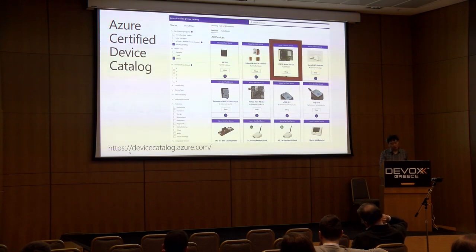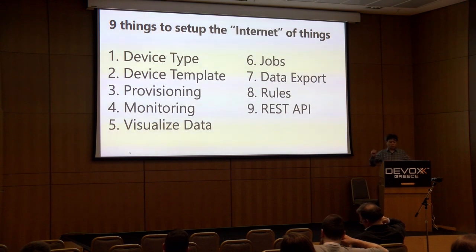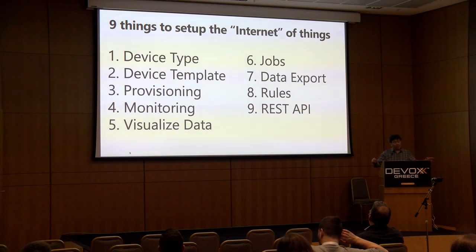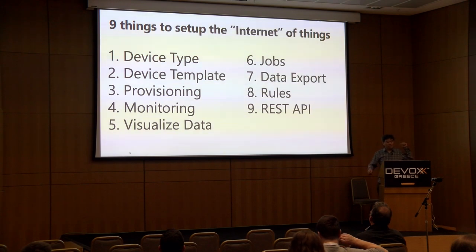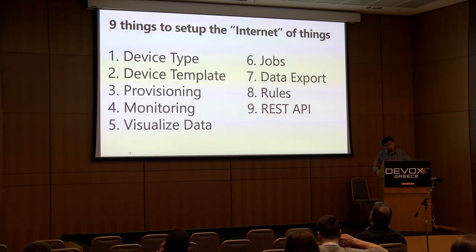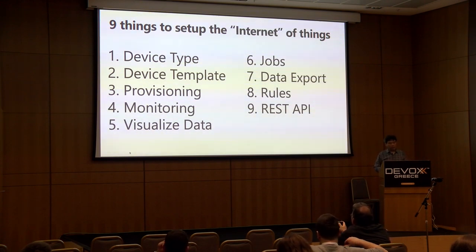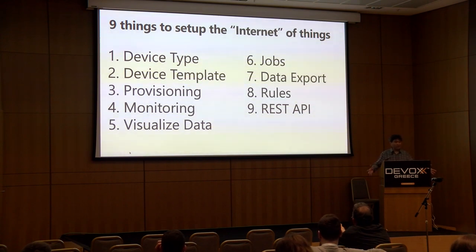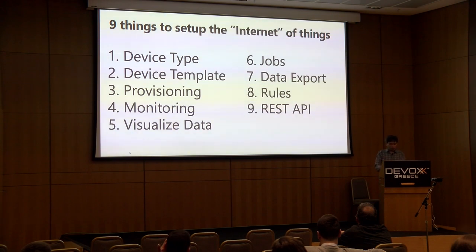There are nine things I'm going to cover today on how you would set up an Internet of Things solution: device type, device template, provisioning, how to monitor devices, how to visualize data, jobs, data export, rules, and REST API. It's a lot of topics but we'll go through them.